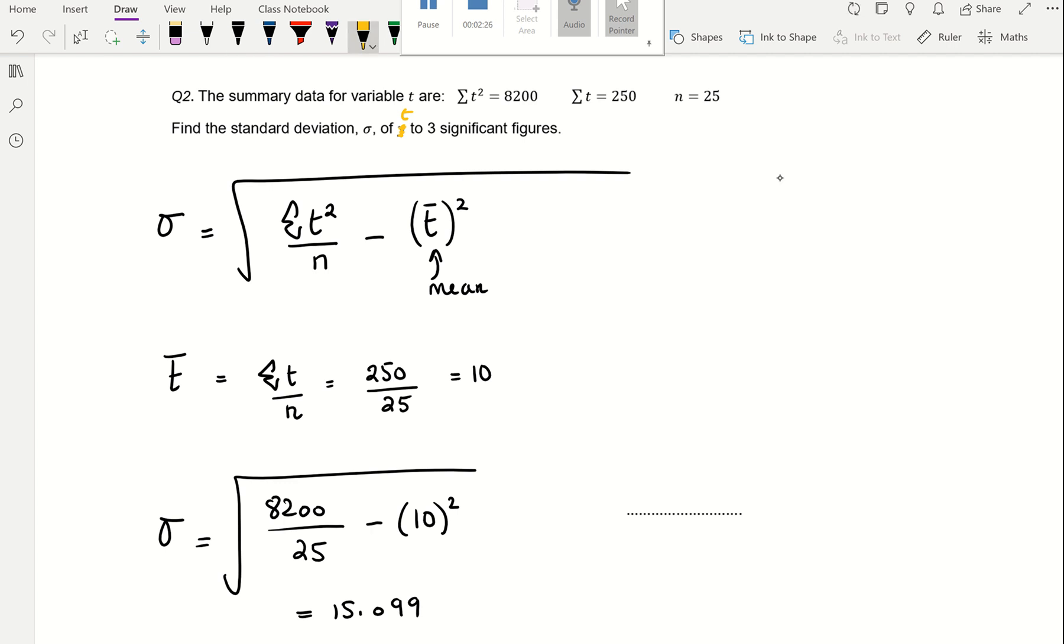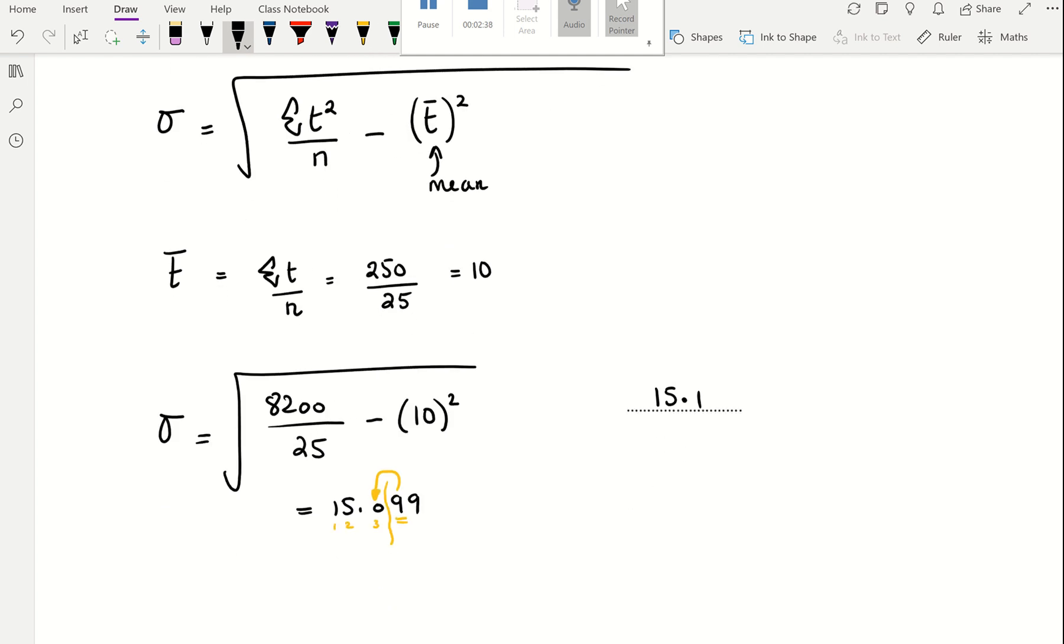I want it to three significant figures. One, two, three. Put my line there. This is a 9, therefore it rounds the 0 up, 15.1. Of course, any number here that is 5 or above rounds up.